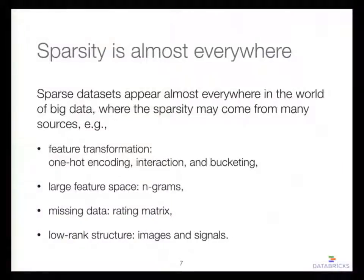For example, if you want to do feature transformation, you may map numerical features into categorical features or categorical features to numerical ones — and you do interactions, bucketing, and all kinds of transformations. If you want to process text, you work with words, n-grams, bigrams, trigrams, which increases the feature dimension a lot. For recommendation you're working on a huge rating matrix, millions by millions. All of these contribute to sparsity.